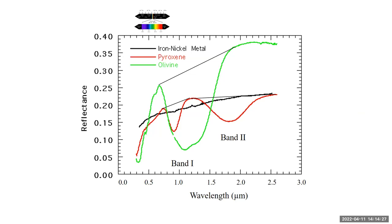This shows reflectance spectra with wavelength on the x-axis and reflectance on the y-axis for different minerals. You have iron-nickel metal — the black line, which is relatively flat — pyroxene in red, which has two absorption features called band one and band two. For olivine in green, you have a very asymmetric band one. The shapes of these absorption features depend on particle size and composition; the composition changes where the band centers are and the strength of the features. At the top you can see where the visible wavelength region lies.